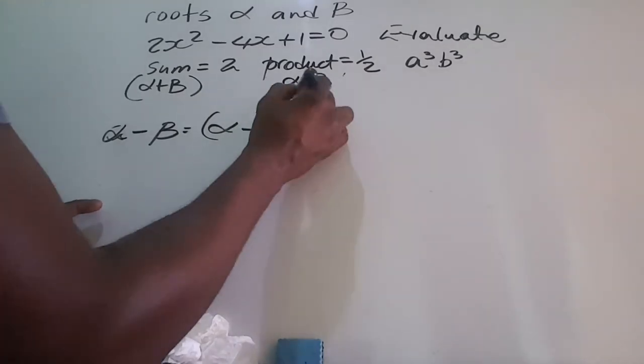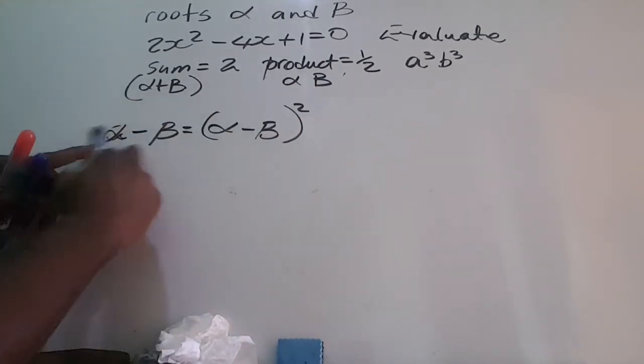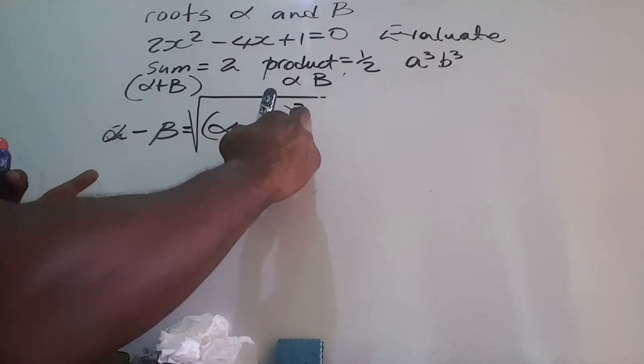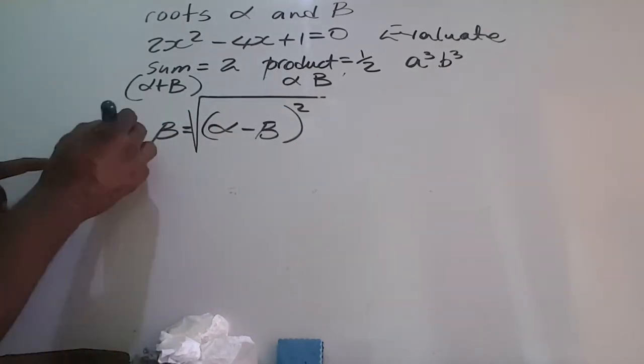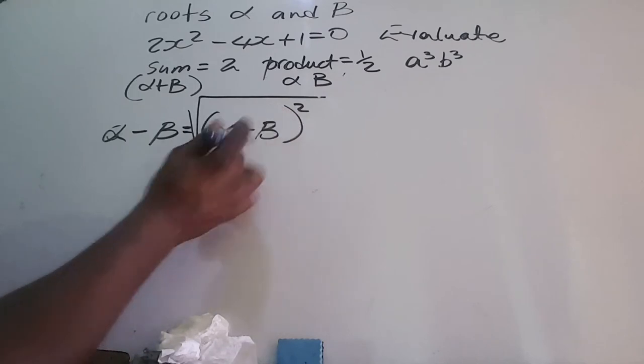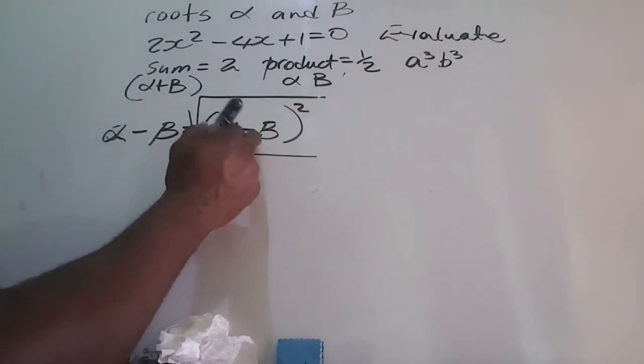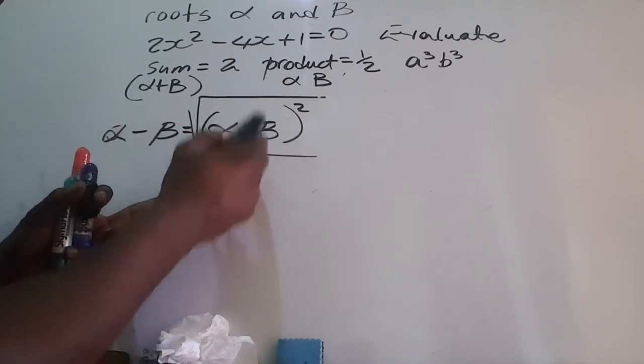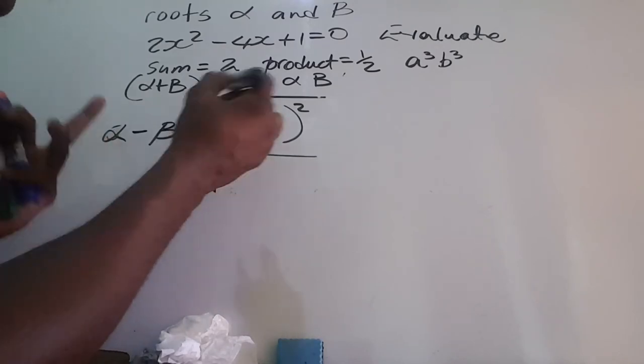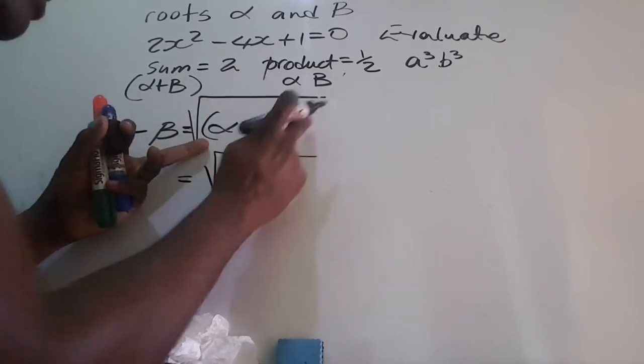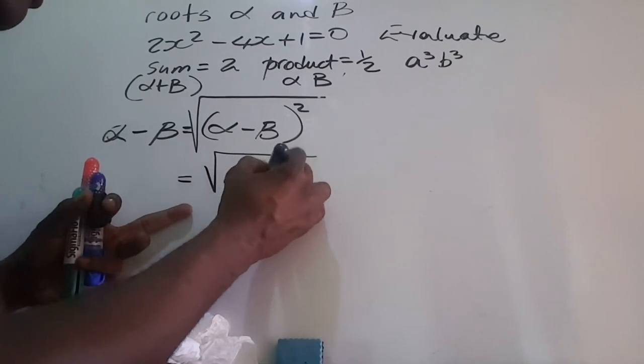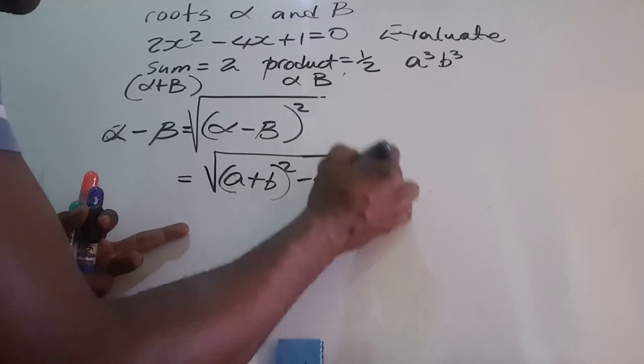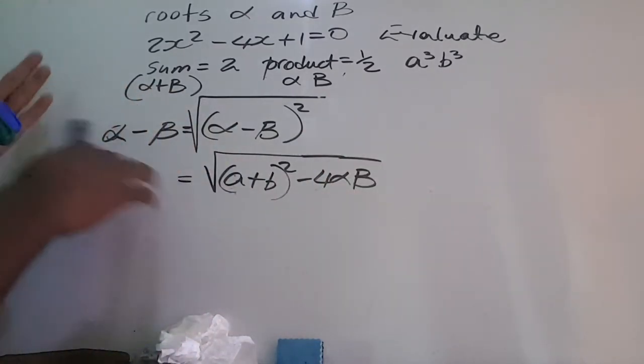If you square this and take the square root, you basically didn't change it because the square would cancel. What we're going to do is keep the square root and manipulate this part underneath. This is going to land us at alpha plus beta squared minus 4 alpha beta, just like we did before.